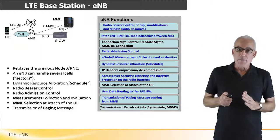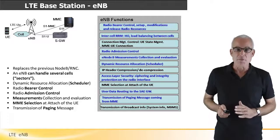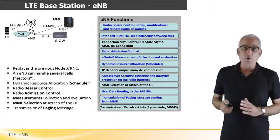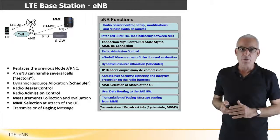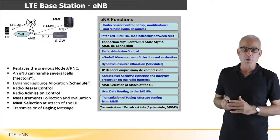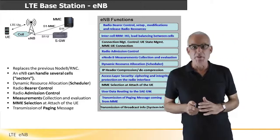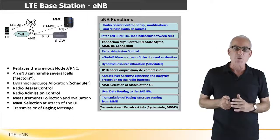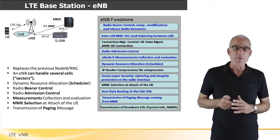The E0B is responsible for the following main tasks. First, providing and managing radio resources for communicating with the UEs. Providing radio admission control. Establishing and managing uplink BIRs. A BIR is a virtual link for a certain level of quality of service directed to a certain IP address.